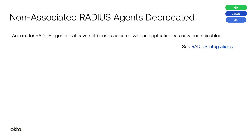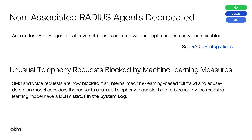Non-associated radius agents deprecated. Access for radius agents that have not been associated with an application has now been disabled. Unusual telephony requests blocked by machine learning measures. SMS and voice requests are now blocked if an internal machine learning-based toll fraud and abuse detection model considers the requests unusual. Telephony requests that are blocked by the machine learning model have a deny status in the system log.